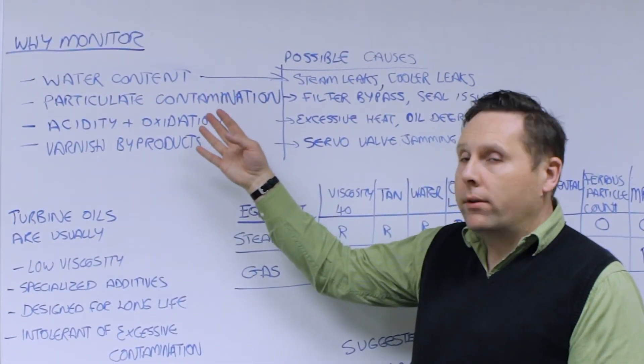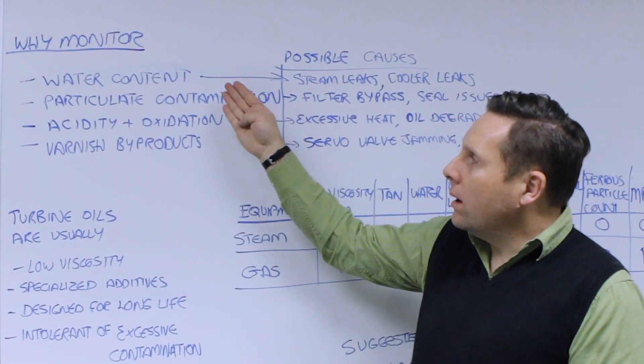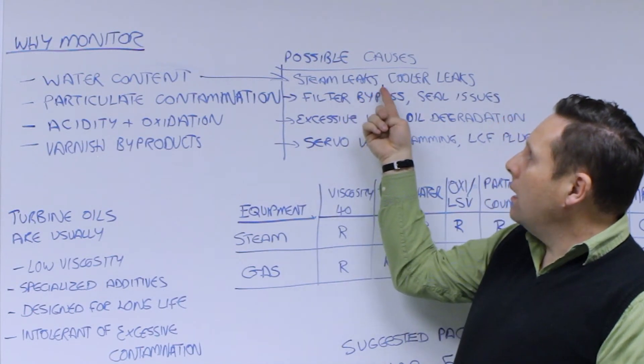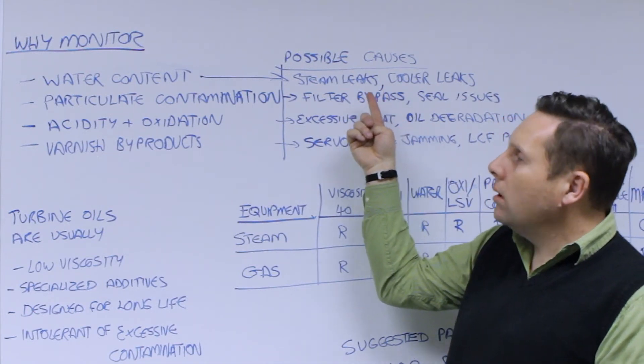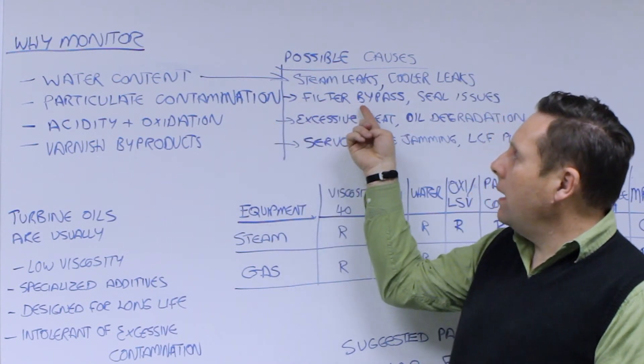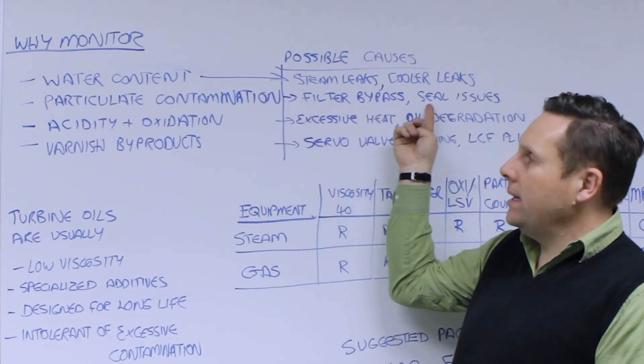So as a result of that, why do we monitor and what do we monitor? We want to specifically monitor water content that could be indicative of possible steam leaks or cooler leaks into the system. We want to look at particular contamination because that could be evidence of filter bypass or seal issues.